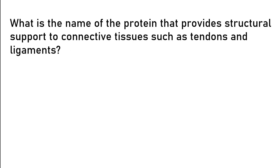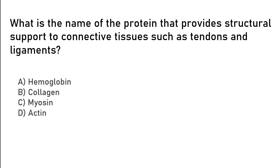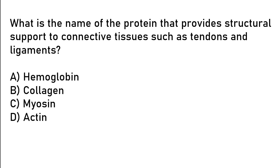What is the name of the protein that provides structural support to connective tissues such as tendons and ligaments? Hemoglobin, collagen, myosin, actin. So the correct answer is option B. Collagen.